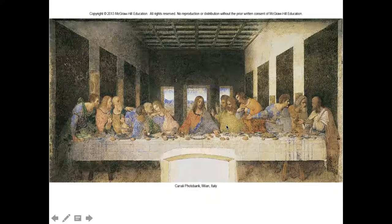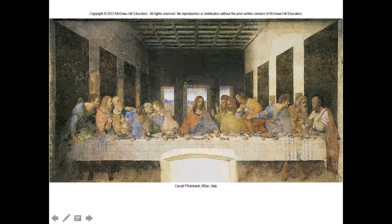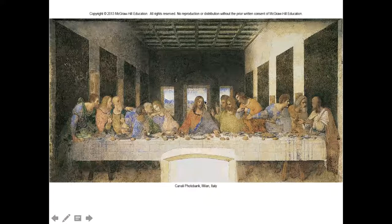We know things are in front because of overlapping — he's forward because he's overlapping the other figures here. This has a one-point perspective, right here on the horizon. We want to focus on the head of the table, who happens to be Jesus. There's also a triangle here, by the way. All these lines converge to a point behind his head on that horizon. So that's one-point perspective. And there's also overlapping.